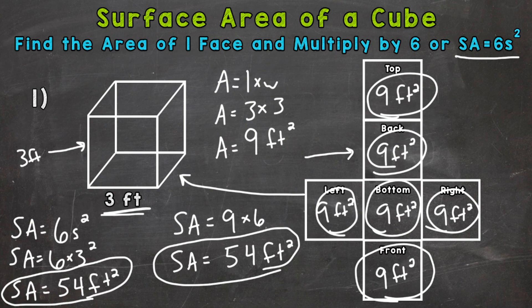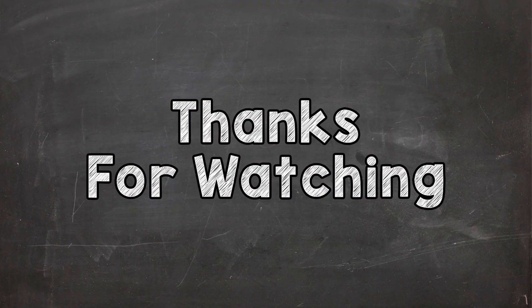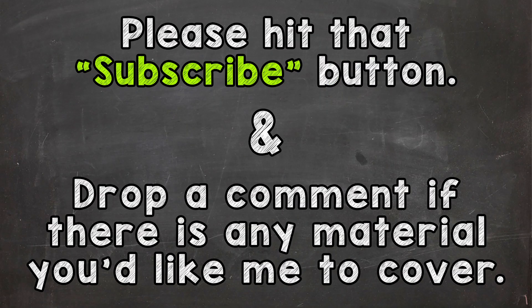So there you have it. There's how you find the surface area of a cube. Again, find the area of one face and multiply that area by six because a cube has six faces and all of them with an equivalent area. I hope that helped. Thanks so much for watching. Until next time, peace.